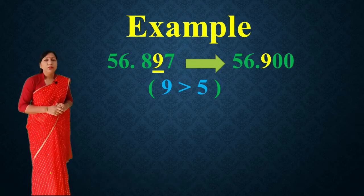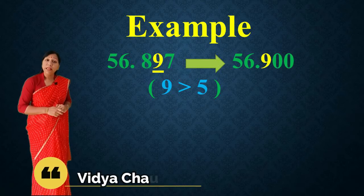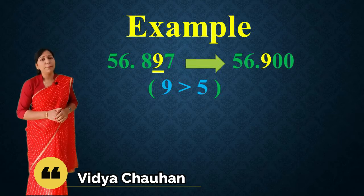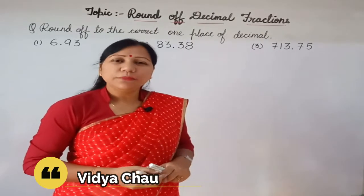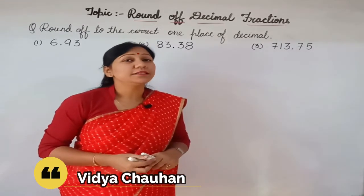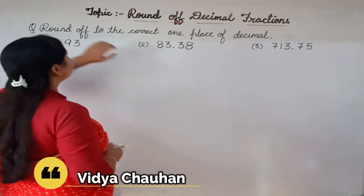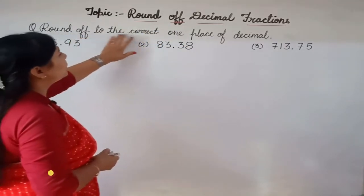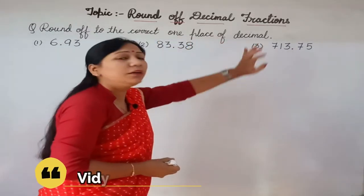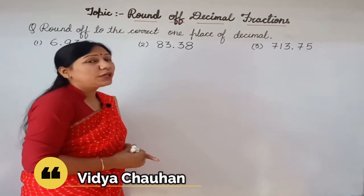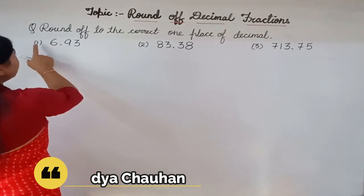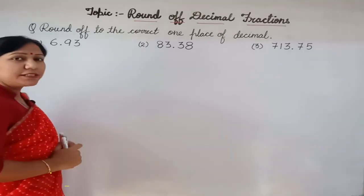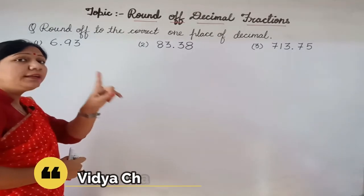This is how you round off decimal numbers correct to one decimal place. Now let us discuss some exercise questions from your book related to rounding off of decimal fractions. The question says: round off to the correct one place of the decimal. The first number is 6.93, and since you have to round off to one decimal place, you consider the hundredths place digit.